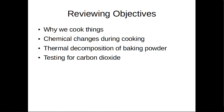Just to review the objectives. Firstly, why we cook things: because they have a better taste and texture, they're easier to digest once cooked, cooking kills off microbes, and some foods could be poisonous raw. Chemical changes during cooking are irreversible — with eggs and meat it's denaturing of the protein molecules, and with potatoes we're rupturing the cell wall. Thermal decomposition of baking powder is the breakdown of sodium hydrogen carbonate to produce sodium carbonate, carbon dioxide, and water. You can test for carbon dioxide by bubbling it through limewater, which will turn cloudy.